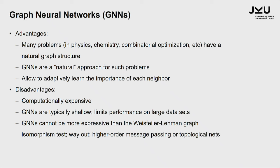The disadvantages compared to other approaches are that they are computationally quite expensive. Typically they can only be implemented in a shallow way — like three, four, five layers — which limits the performance on large datasets. GNNs are also fundamentally limited due to some graph theoretical theorems; in particular, they can't be more expressive than the so-called Weisfeiler-Lehmann graph isomorphism test. But there is a way out: people are developing so-called topological nets that allow higher expressivity — though again, no free lunch.